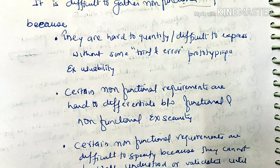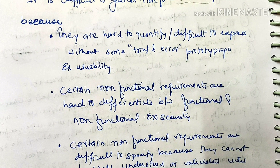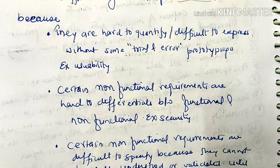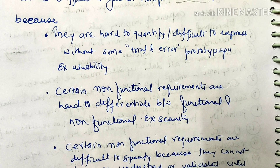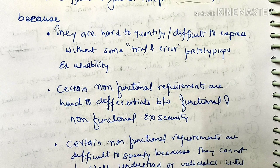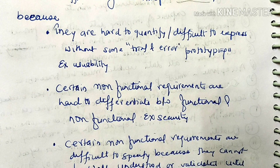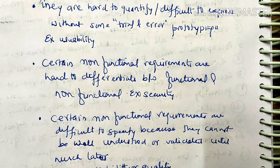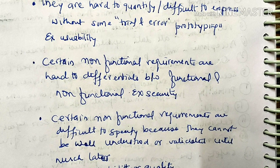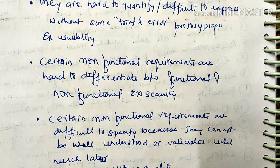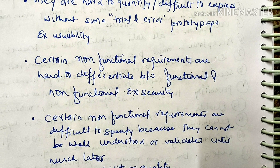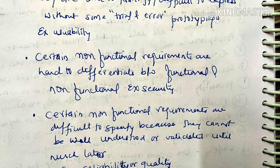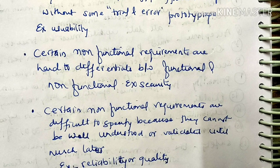It is difficult to identify non-functional requirements through prototyping because we cannot easily express them — we can only determine them through trial and error. For example, usability: how usable is your software can only be known after using it. Certain non-functional requirements are hard to differentiate from functional requirements — for example, security could be treated as a functional requirement too.